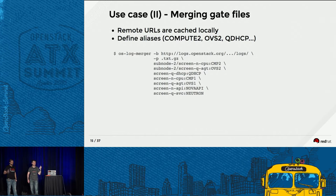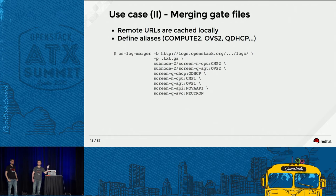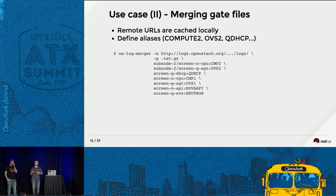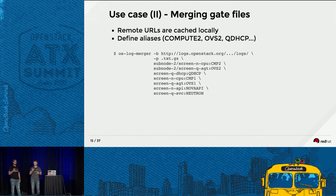Now, an example of merging files from the gate where we manually specify aliases. We define a base URL for all files, define the extension/postfix for those files, then define the path within that base followed by a colon and the alias. This retrieves those files and merges them with those specific aliases.